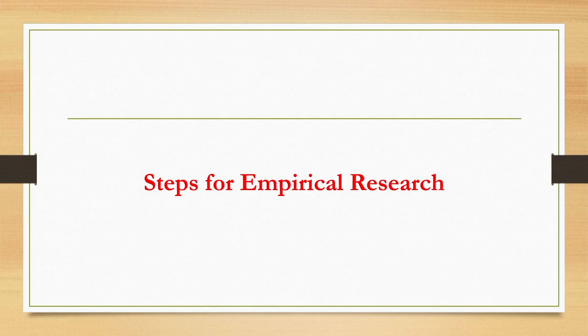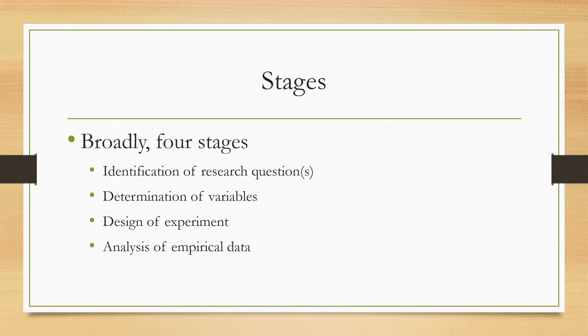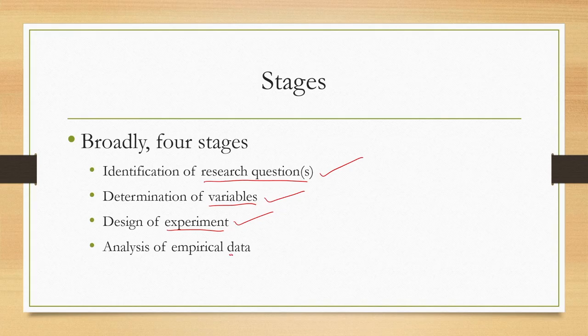Our primary objective is to observe user behaviour in a controlled environment: we provide tasks, control the experimental conditions, and under that controlled environment observe how users behave while performing the tasks. Based on that, we conclude about usability by analysing the observed data. In empirical study, we do several things, and it is useful to think of the study as consisting of four distinct stages: identification of research questions, determination of variables, design of experiment, and analysis of data.